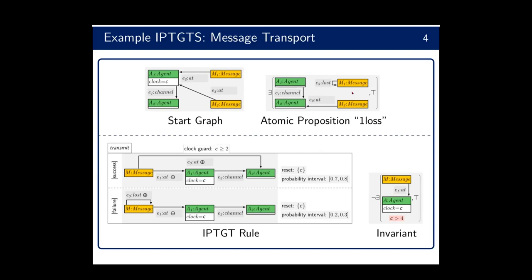That is basically the example and how this formalism can be used to model a system. Attributes and priorities were not used in this example, but they are supported by the modeling formalism and our analysis approach.